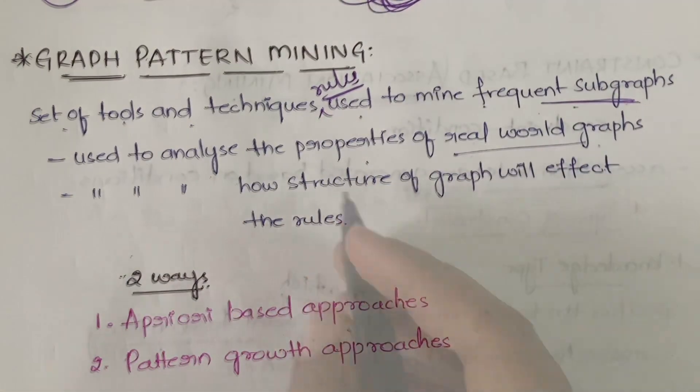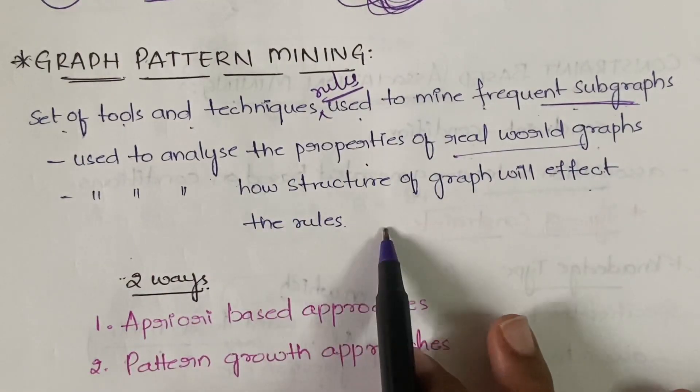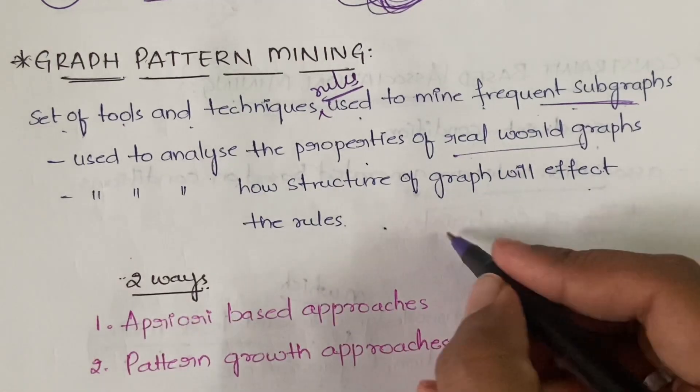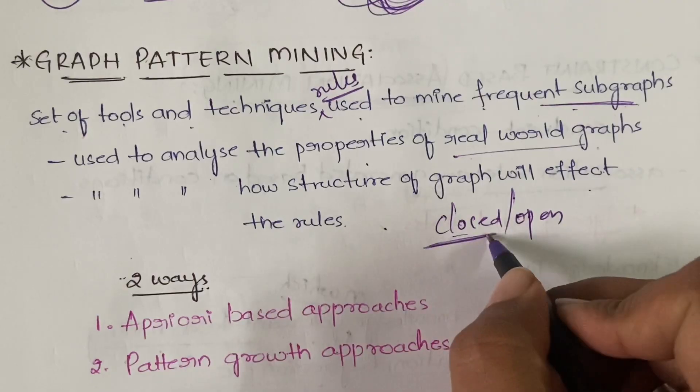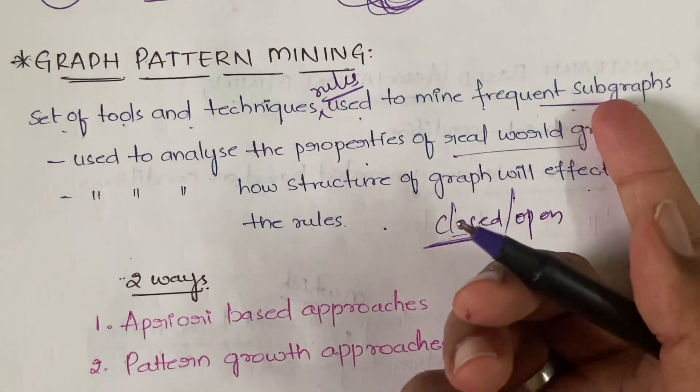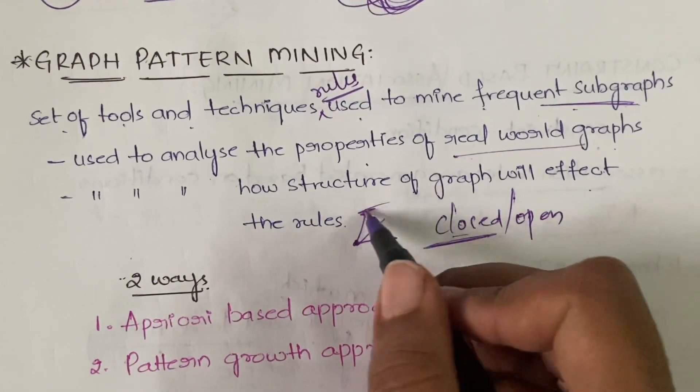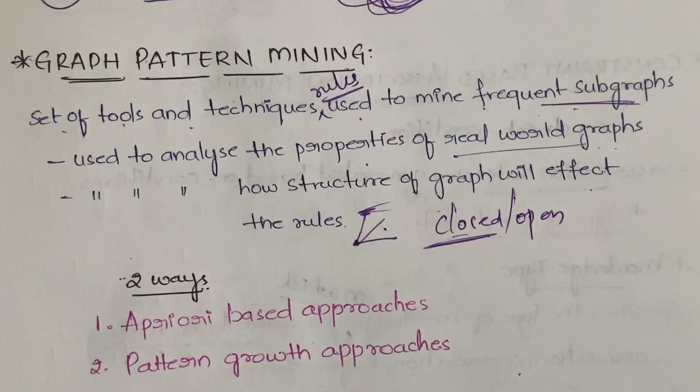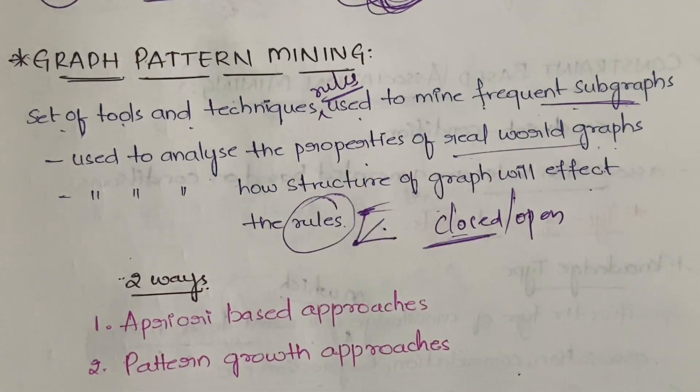It is also used to analyze how structure of graph will affect the rules - that is, whether it is a closed graph or an open graph. Even if it is a closed graph, how the vertices are connected, how many edges we have connected, whether these edges are closing edges or opening edges. Based on all those factors, how the rules are affected and how the rules get changed - that you can know by the help of this graph pattern mining.